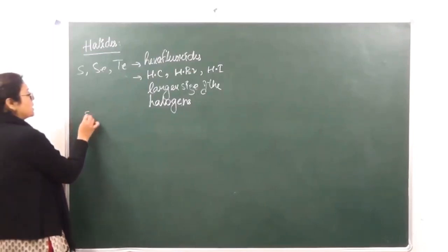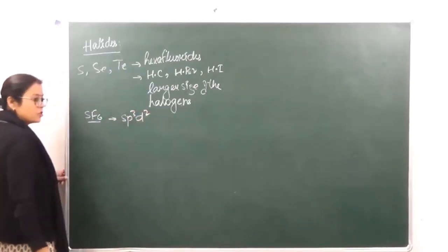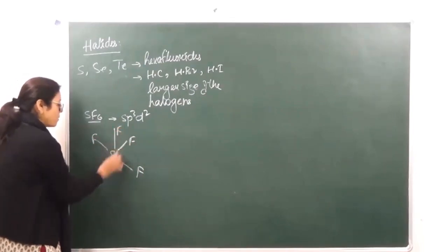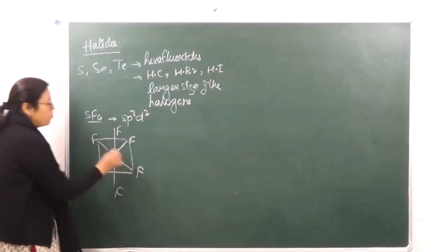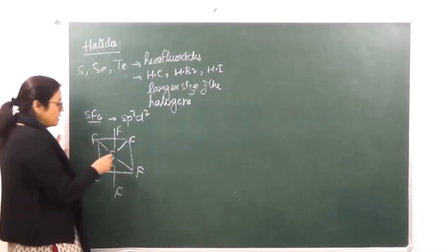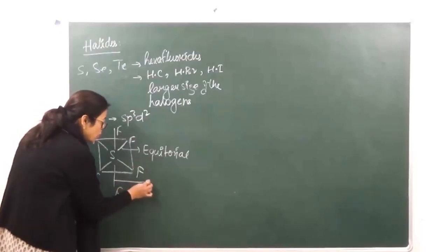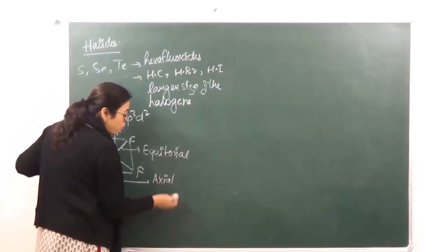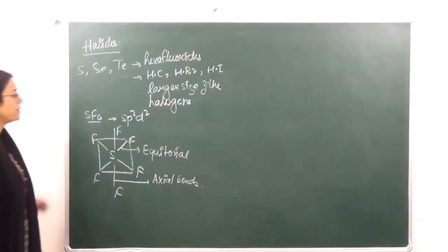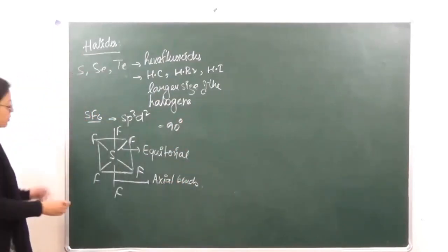If we look at the structure of SF6, there is SP3D2 hybridization. We have sulfur with six fluorines. There are two types of bonds present — equatorial bonds and axial bonds — with four equatorial bonds and two axial bonds. All bond angles are equal to 90 degrees, irrespective of whether they are equatorial or axial bonds. The structure is octahedral.